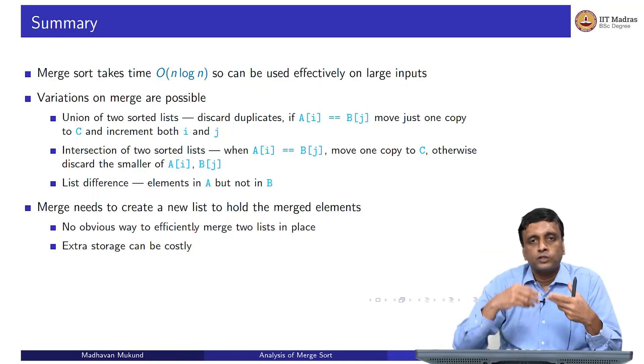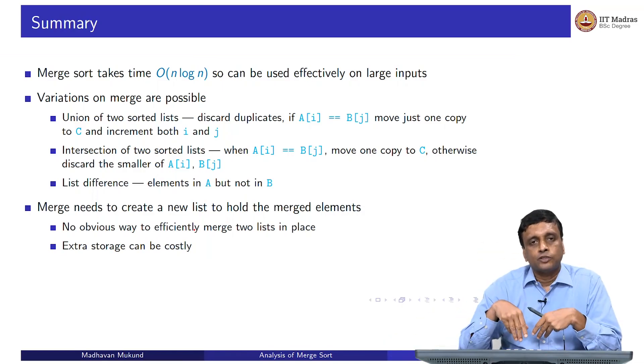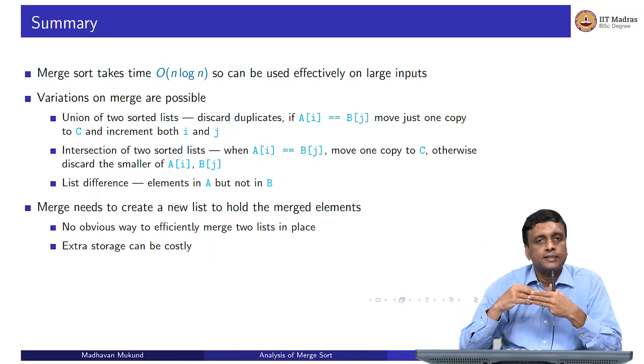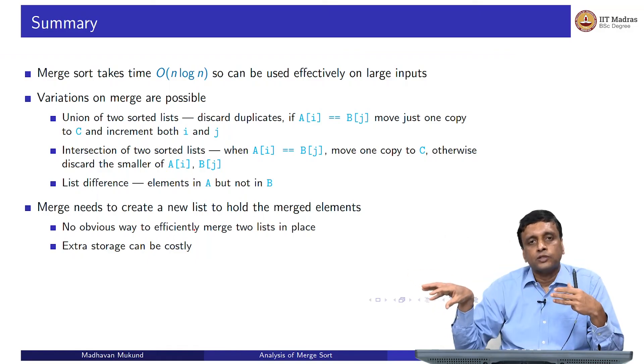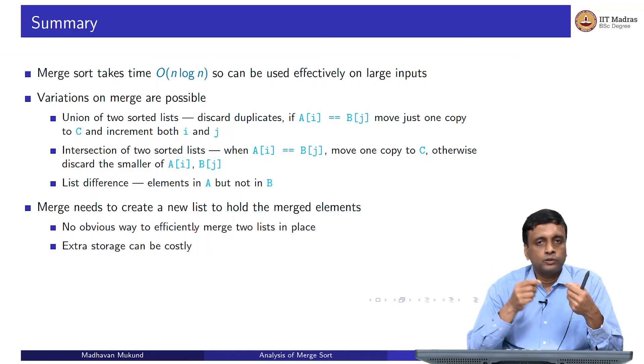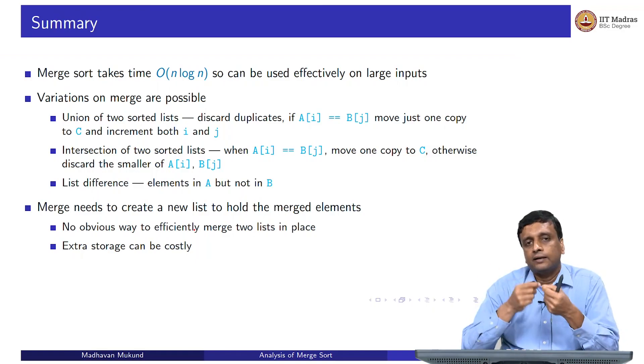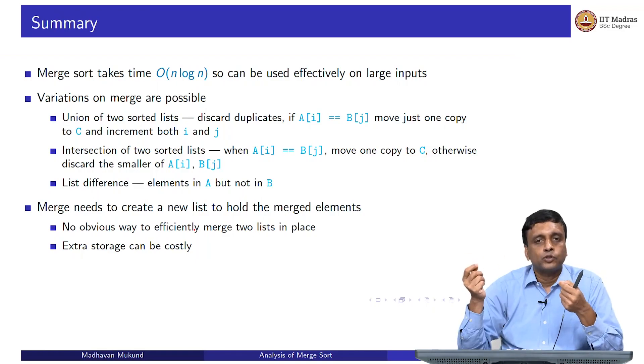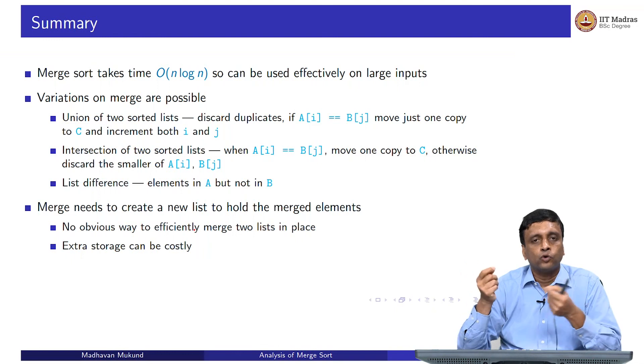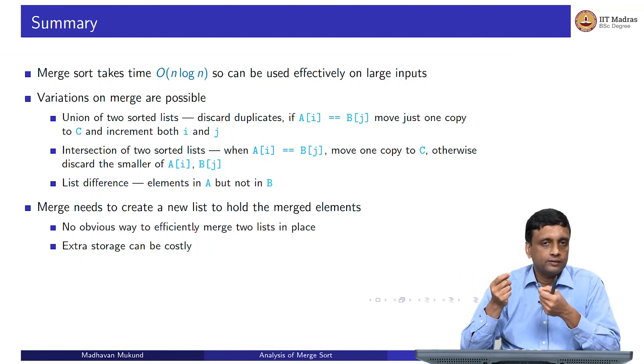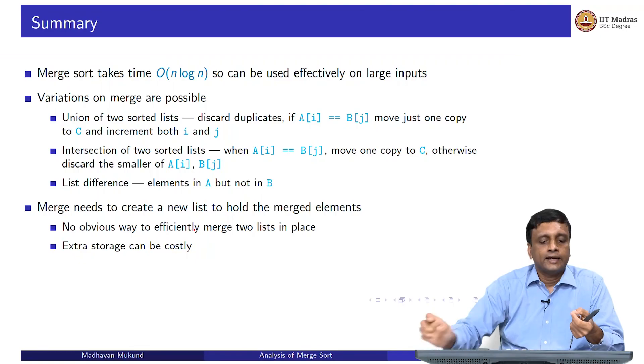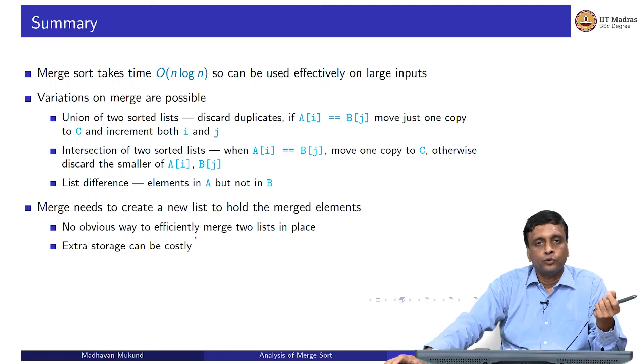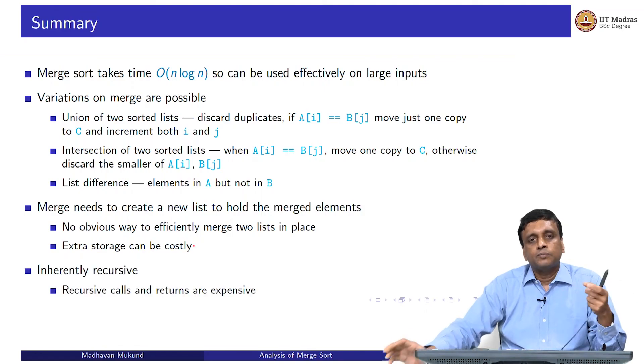One of the drawbacks of this thing is that merge needs to create a new list. There is no obvious way to put those lists back into the list that you started with. Remember that in insertion and selection, we had a clever way of moving the things to the beginning so that we did not have to create a new list. But in merge, there is no obvious way to actually put it back because you have no idea really where it is going to come. You cannot really take and reuse space in A and B to store the merge of A and B - you do not know which of them is going to move faster compared to the other. So you have no option but to create extra space. And this extra space is an extra resource that we have to use.